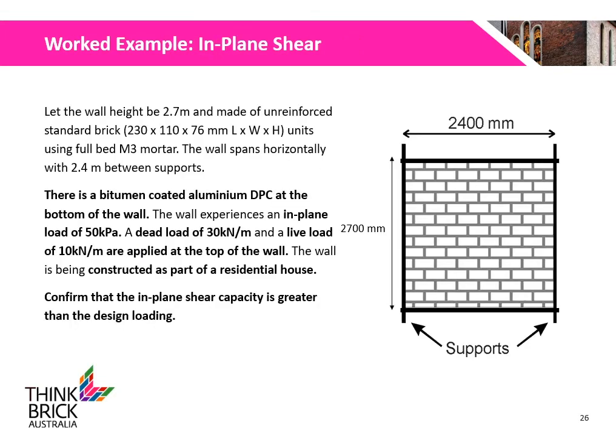This example requires us to design a residential load-bearing wall with an in-plane loading of 50 kPa. A dead load of 30 kN/m and a live load of 10 kN/m are applied at the top of the wall. The wall is 2.7 m high, made of standard brick units, using full bedding of M3 mortar. The wall spans horizontally at 2.4 m and is supported on all four sides. There is a damproof course located at the bottom of the wall. We will confirm that the in-plane shear capacity is greater than the design loading.